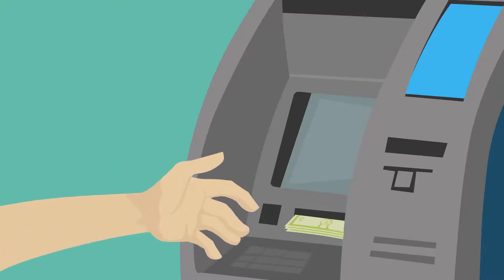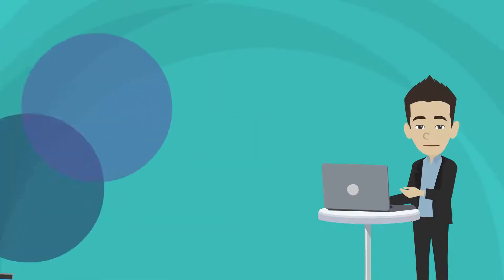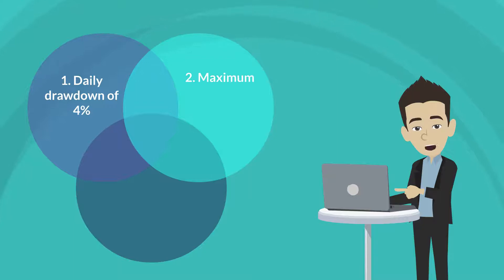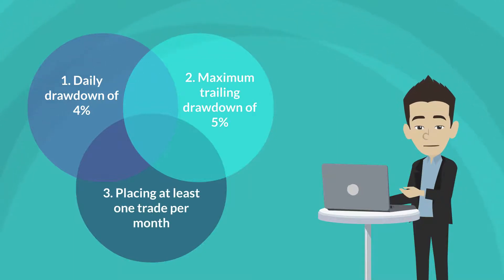You can withdraw your profit anytime. Our three simple trading rules are: 1. Daily drawdown of 4%, 2. Maximum trailing drawdown of 5%, and 3. Placing at least one trade per month.